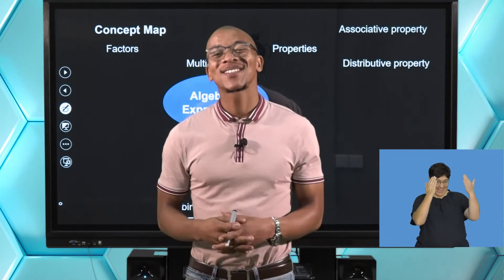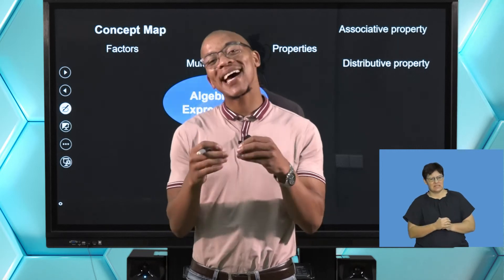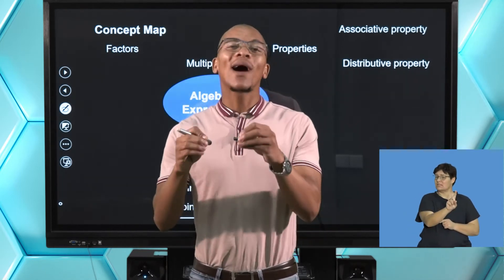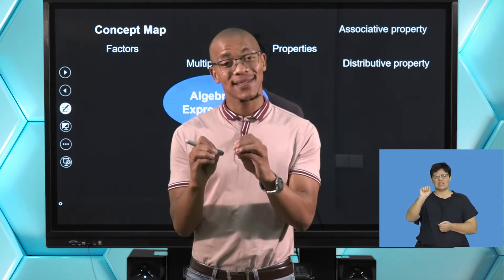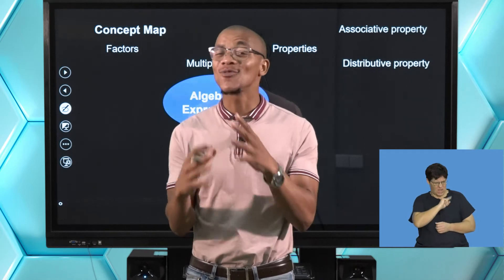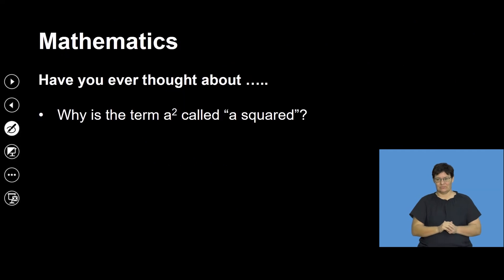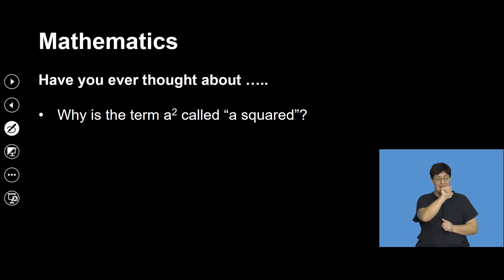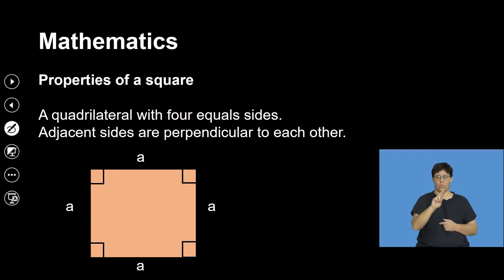Welcome back. Right now we're going to look at something else. Remember our leading question was: why is a to the exponent of 2 called 'a squared'? That's what we're going to try and look at in this particular segment.